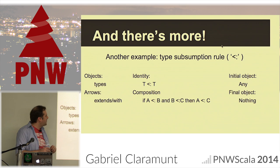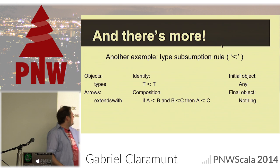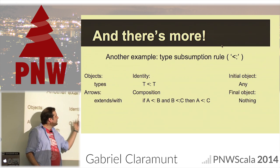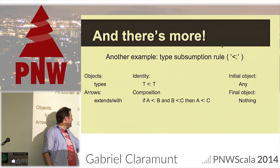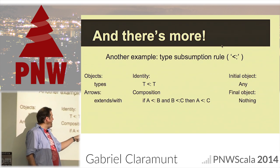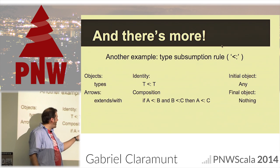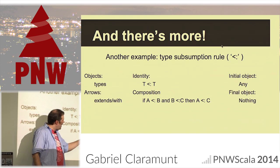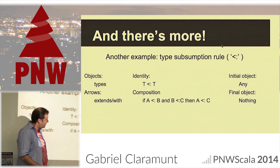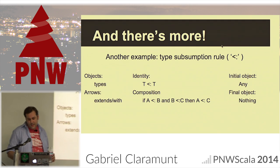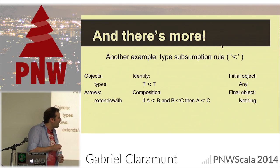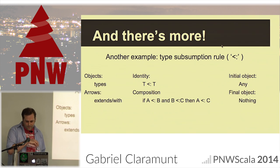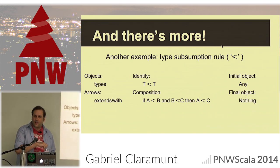You can also take objects as our types and arrows as the extends-or-is-a subtype relationship, and model your type hierarchy as a category. You have identity — a type can be substituted by itself — and composition: if A can replace B and B can replace C, then A can replace C. If you remember the Scala object hierarchy, our initial object would be Any and the final object would be Nothing.